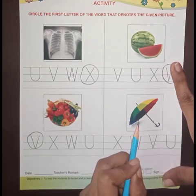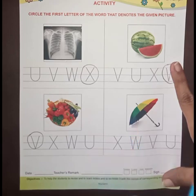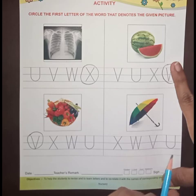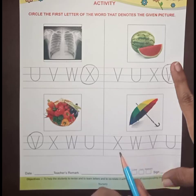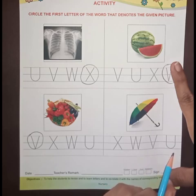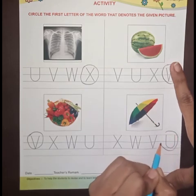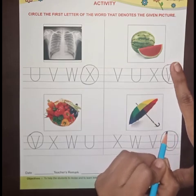What is this? This is an umbrella. So, from which letter does the umbrella come? From X? W? V? U. Yes, from U. So we have to circle the letter U.